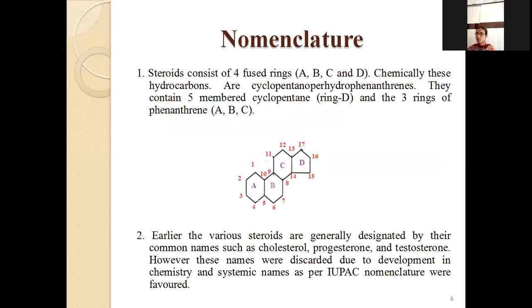Nomenclature of steroids: steroids consist of four fused rings labeled A, B, C, and D. These are hydrocarbons known as cyclopentano perhydrophenanthrene. The D ring is a 5-membered cyclopentane ring, and rings A, B, C form the phenanthrene (three 6-membered rings). Various steroids were historically given common names like cholesterol, androsteron, and testosterone, but with development, IUPAC nomenclature became preferred. Numbering begins with the phenanthrene carbons, followed by cyclopentane carbons, then substituents. The parent steroid contains 17 carbon atoms.